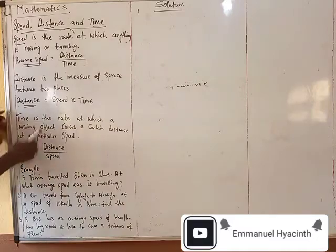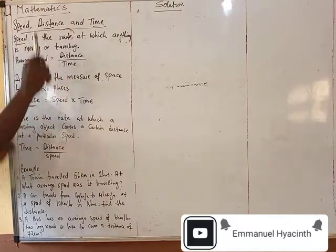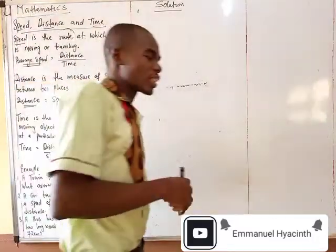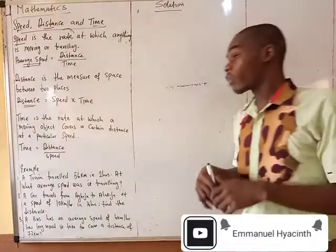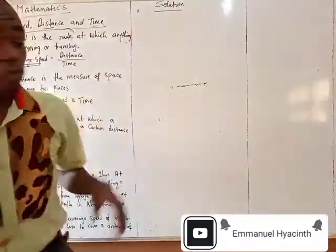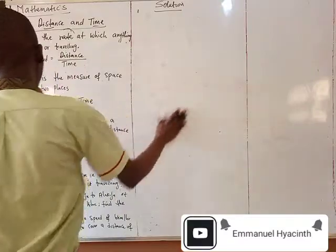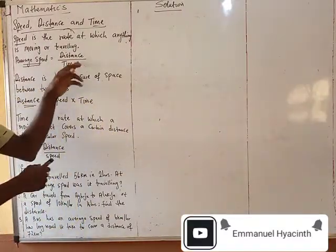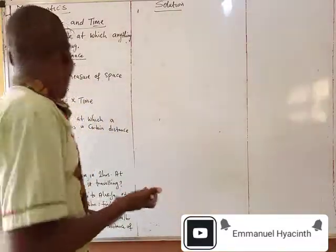So the formula of finding speed is what? Distance over time. Now, you know someone will say that everything now is formula. Yes, everything is formula. Mathematics is simple if you remember the formula. Formula of finding speed is what? Distance over time.